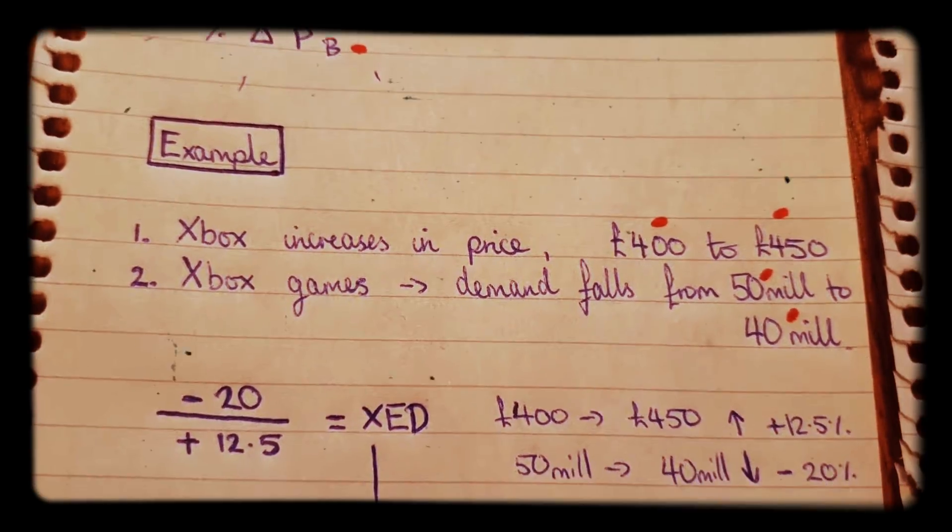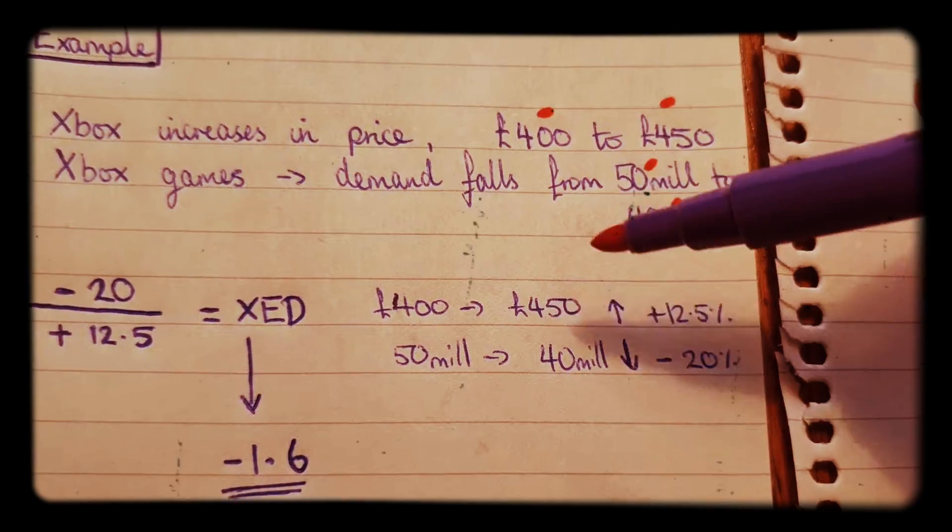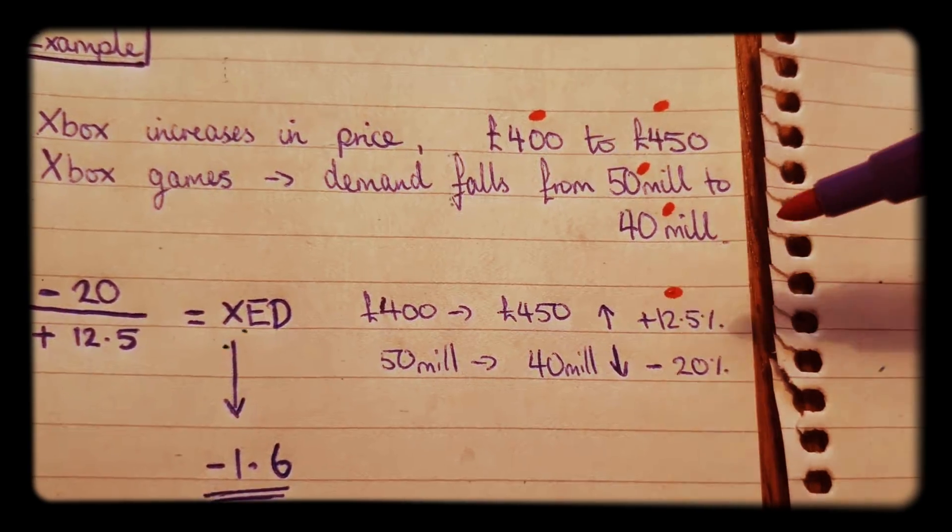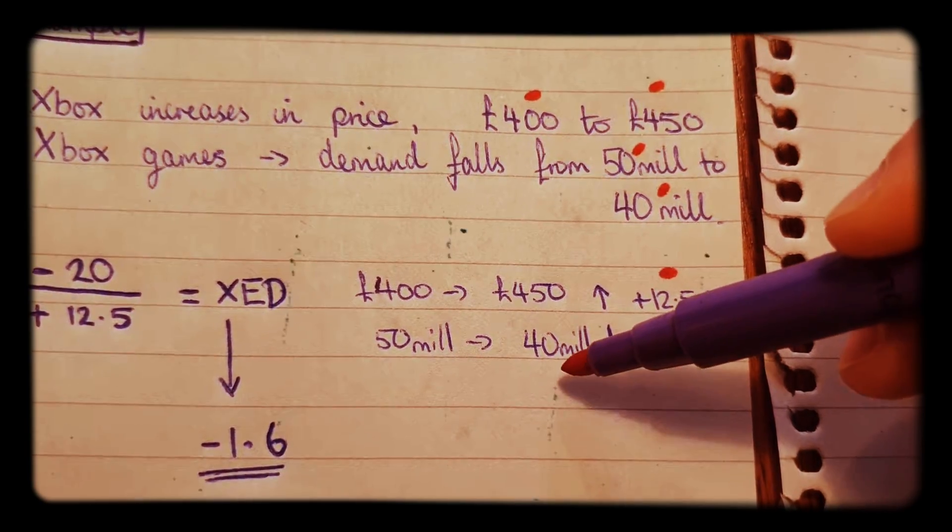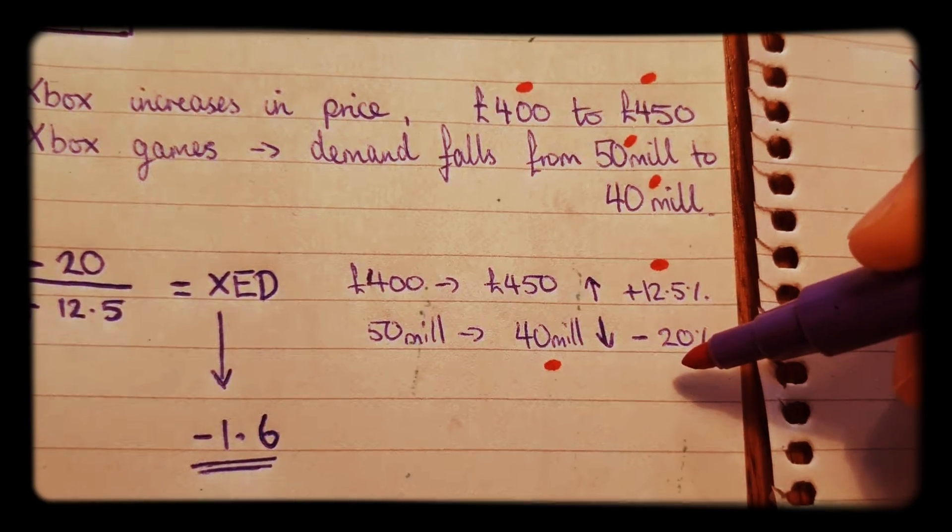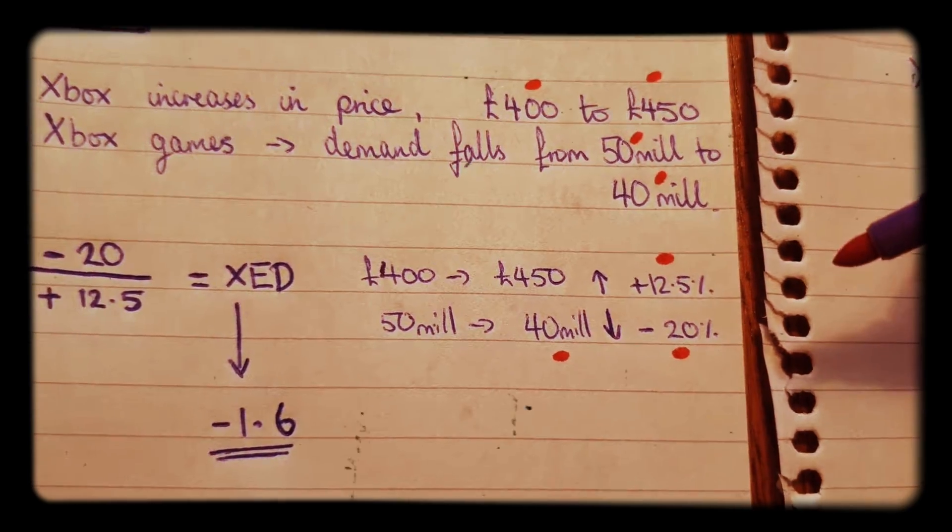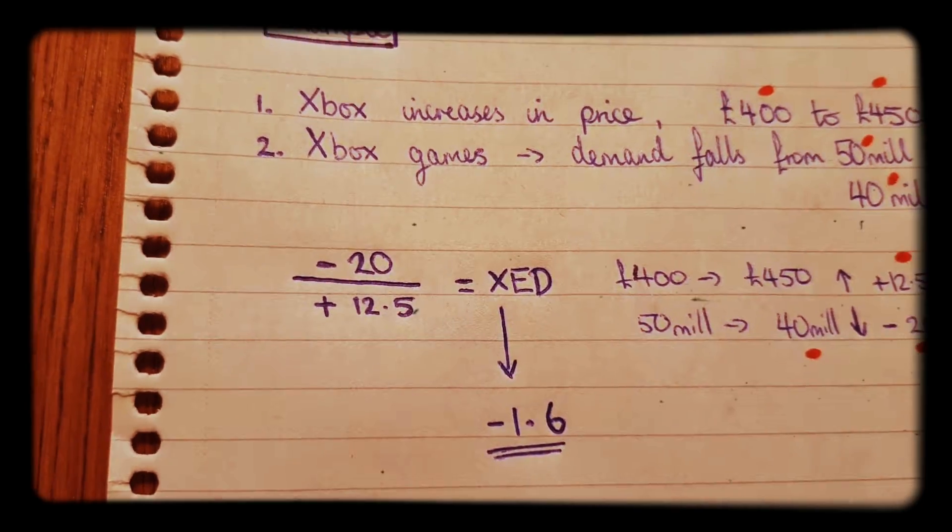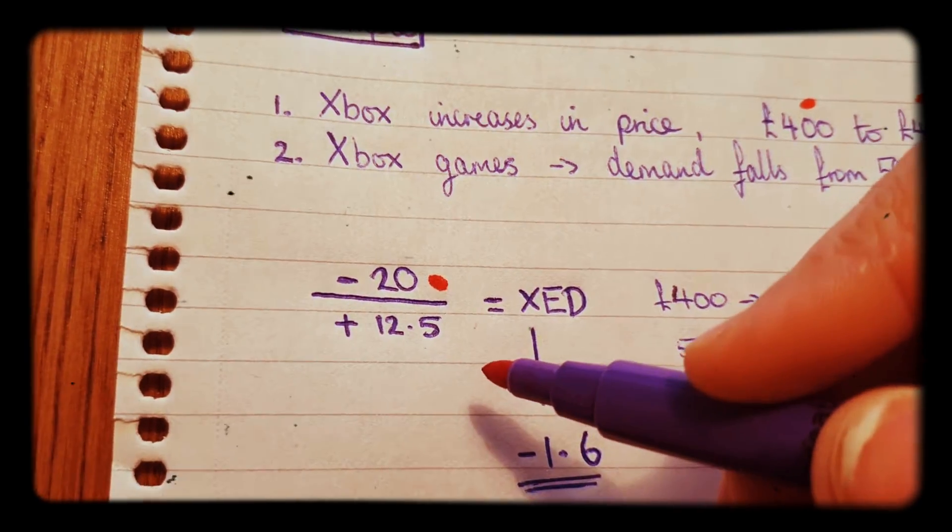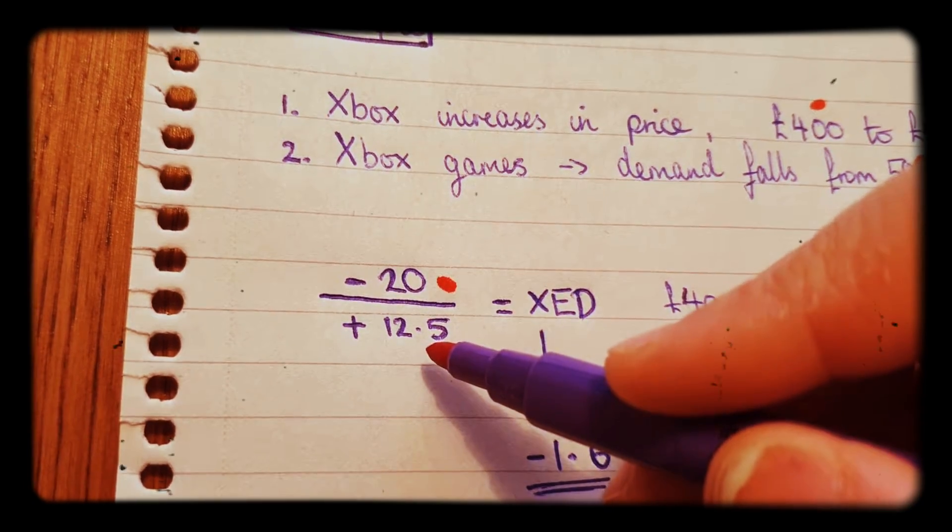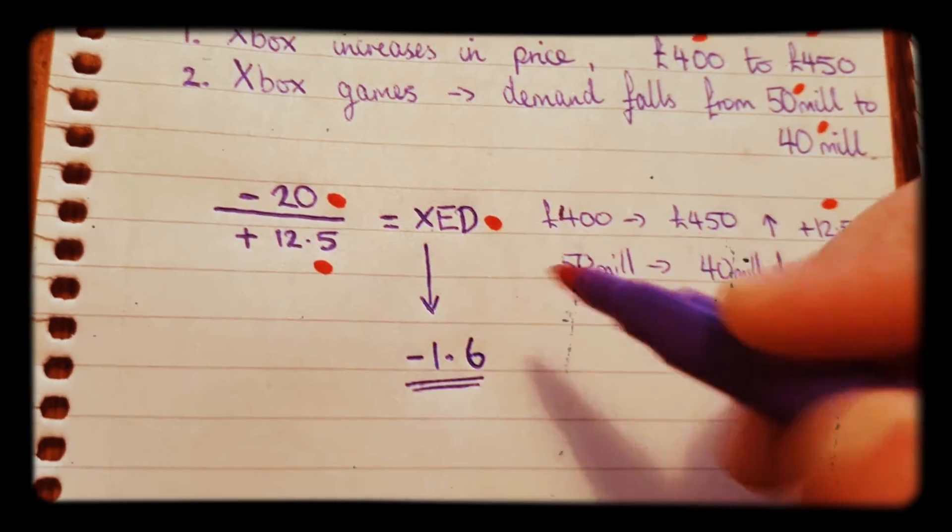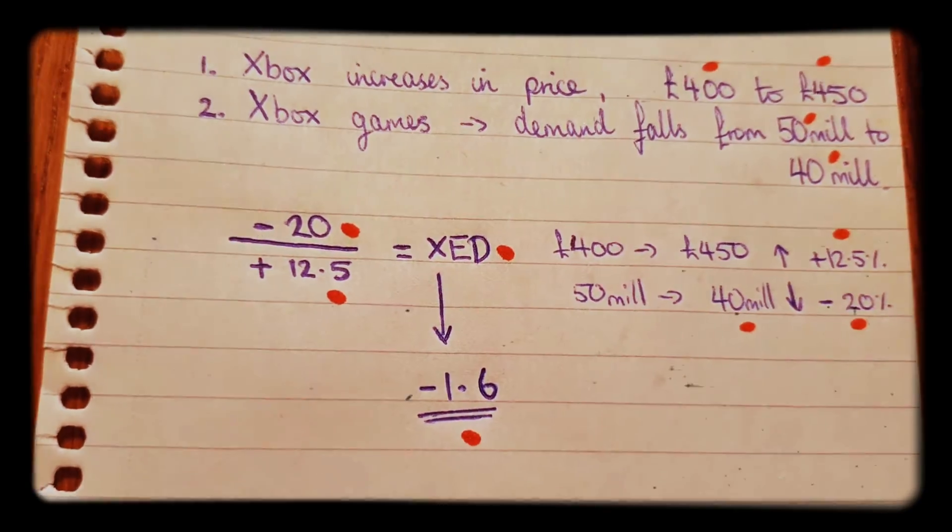This is how we work out the XED. £400 to £450 is an increase in price of 12.5%. £50 million going down to £40 million in sales is a decrease of 20%. So this is how we put it into the equation: minus 20% over positive 12.5%. Therefore, you get the XED. If you work that out, you'll get minus 1.6.